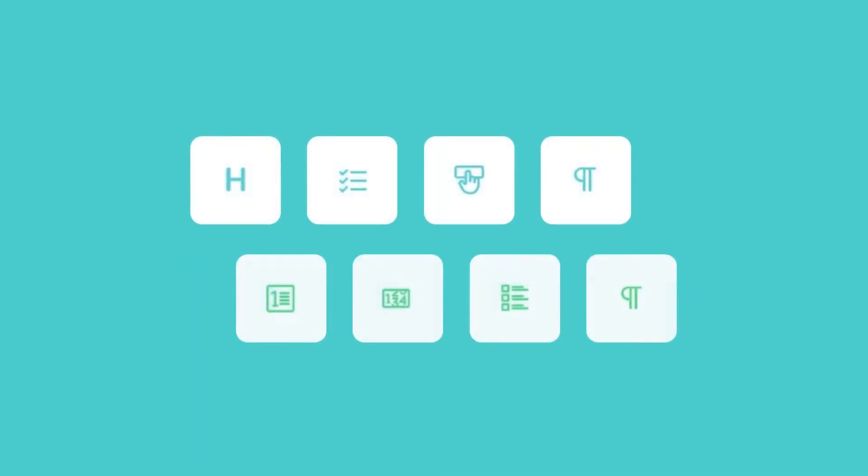Blocks that will have typography settings include heading, text, button, subtitle, count-up, icon list, number box, and posts.